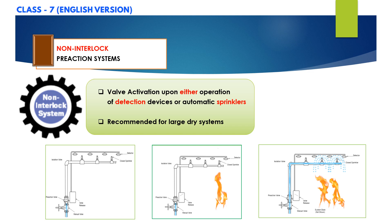Non-interlock type is recommended for large dry systems which exceed the capacity normally permitted on a dry valve by NFPA 13. There is a limitation for maximum capacity for dry pipe systems. If you want to know more on dry type systems, you can check the related video for more details.